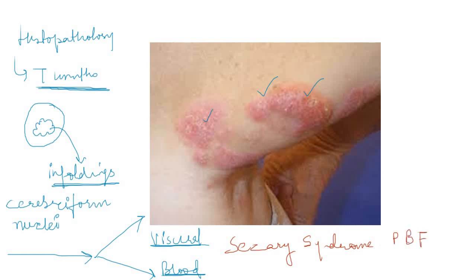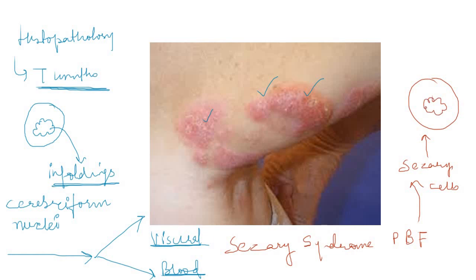The cells present in the peripheral blood film in Sézary syndrome are called Sézary cells. These Sézary cells have the characteristic cerebriform nucleus. In Sézary syndrome we see both the skin lesions and the tumor cells — the Sézary cells — in the peripheral blood film.